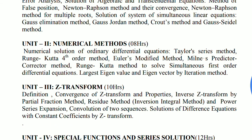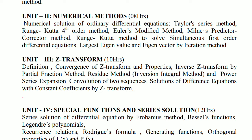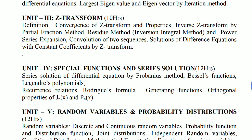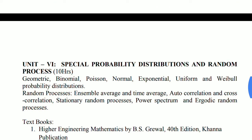Moving to unit number 3, Z-transform, it is having a weightage of 12 marks. Unit number 4, Special Functions and Series Solution, it is having a weightage of 14 marks. Unit number 5, Random Variables and Probability Distributions, having a weightage of 14 marks. And the last unit, unit number 6, Special Probability Distribution and Random Process, again it is of 14 marks. So probability is having 2 units, that is unit number 5 and 6, and that comprises a total of 28 marks.